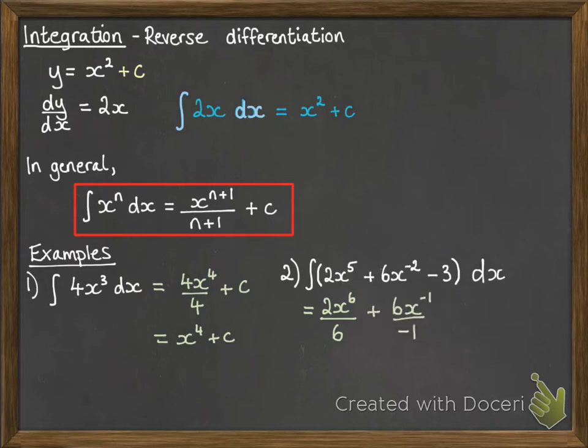And then minus 3, well that's got an x to the 0 with it to be a constant there. So if we raise that, we will get x to the power of 1. And then of course dividing by 1 doesn't change it. So it'll just be minus 3x. The same as when you know if you had to differentiate minus 3x, you would just get minus 3. And then of course finishing it off with a plus c. So simplifying that down, there we get our final answer.